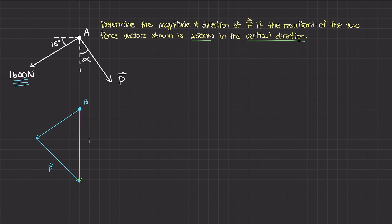I'll call this resultant R. We already know the magnitude of R is 2500 newtons, and the angle it makes with the horizontal line is 90 degrees. Now let's start labeling some angles because we're going to need them to figure out what P is. We already know that the 1600 newton vector makes an angle of 15 degrees with the horizontal.